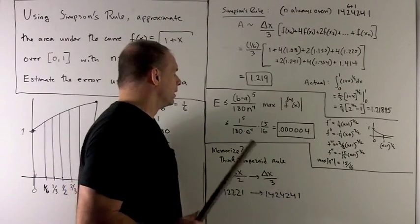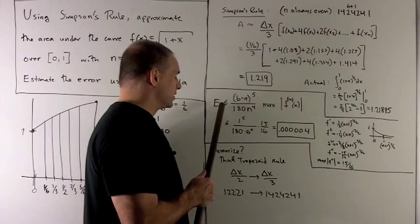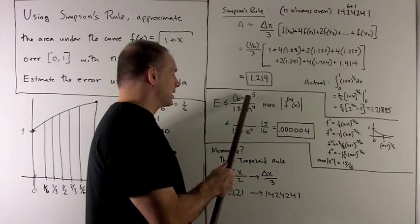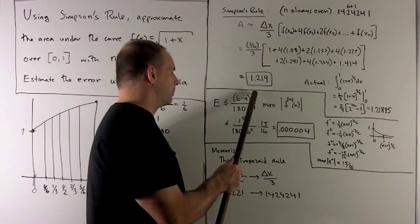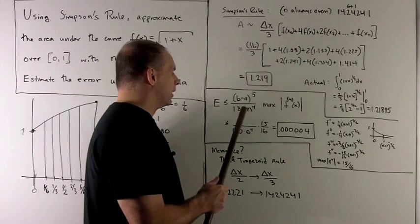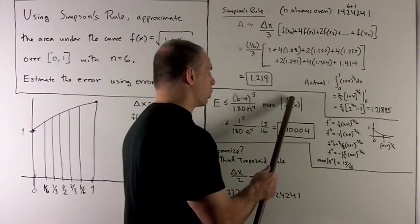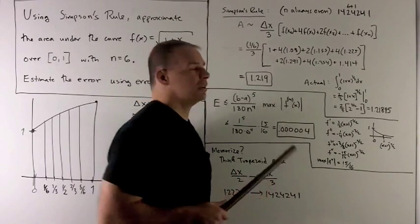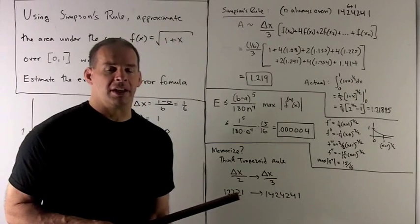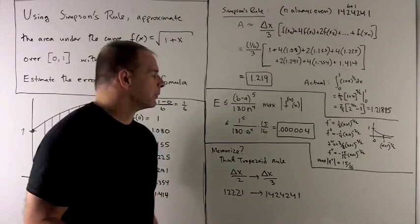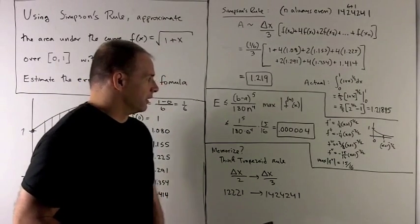For Simpson's rule, the error bound is given by, take the length of the entire interval, raise to the fifth power, divide by 180, divide by n to the fourth, and then multiply that by max of the fourth derivative of f. Okay, it looks pretty ridiculous, but there you go.